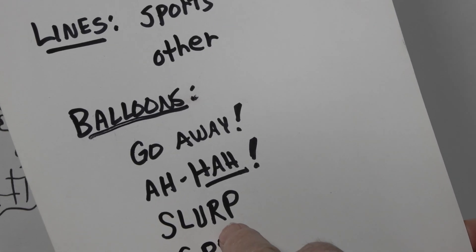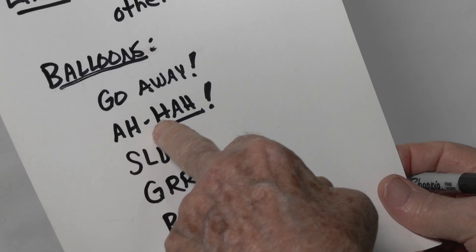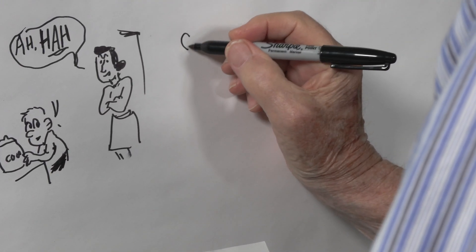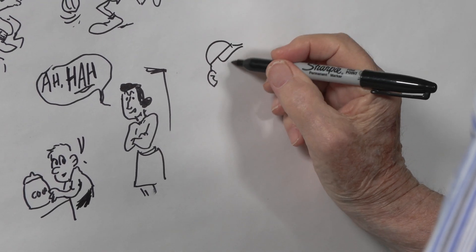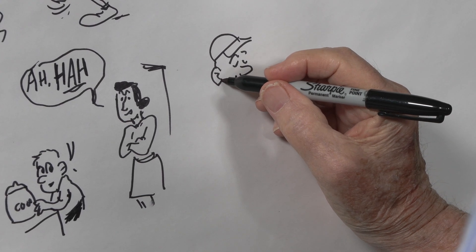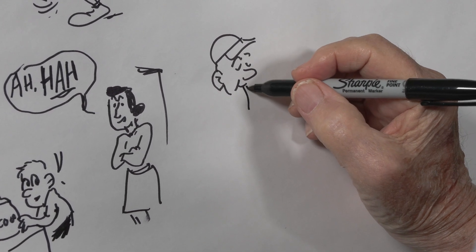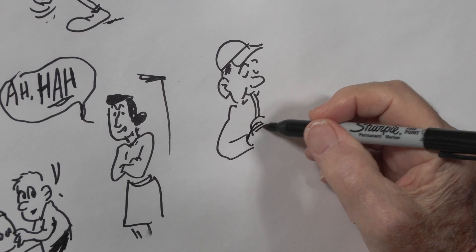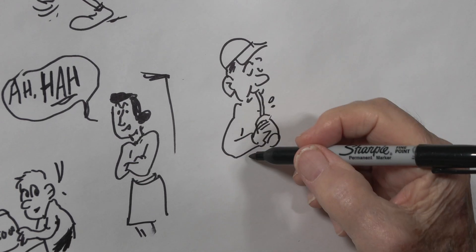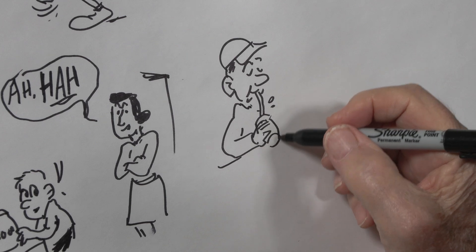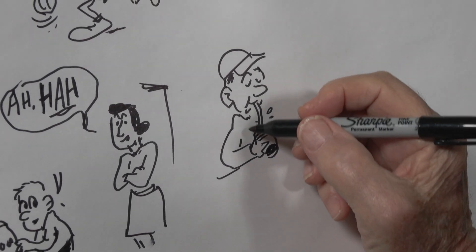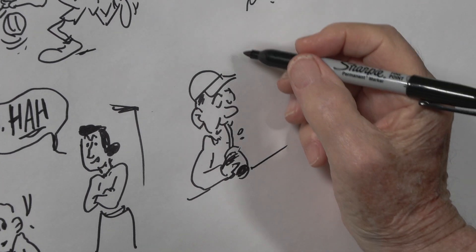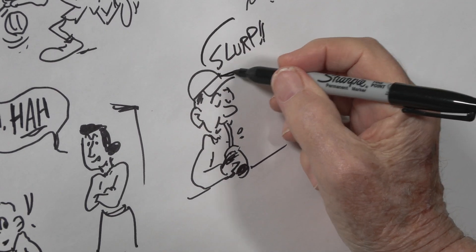Well, this next one, slurp. I don't know if that's a word any more than ah-ha is a word. But anyway, it involves, first of all, somebody who is really enjoying his cola or his milkshake or whatever. He's slurping it through the straw. Really, a happy face. What could be a happier moment than a nice chocolate shake or ice-cold Coca-Cola? So, he's the one that's saying slurp. That's his balloon.